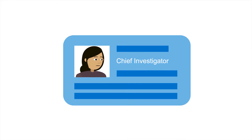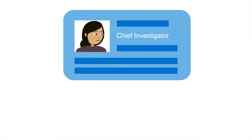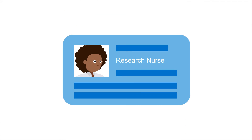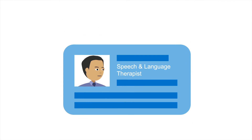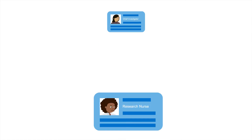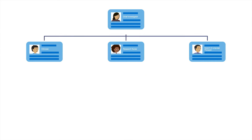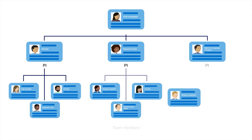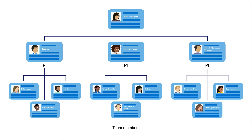All staff working on a study should be listed on the delegation log and should be qualified and experienced to undertake their delegated duties. The chief investigator has primary responsibility for the overall study running in multiple sites, while the principal investigator is responsible for a small team for each site.